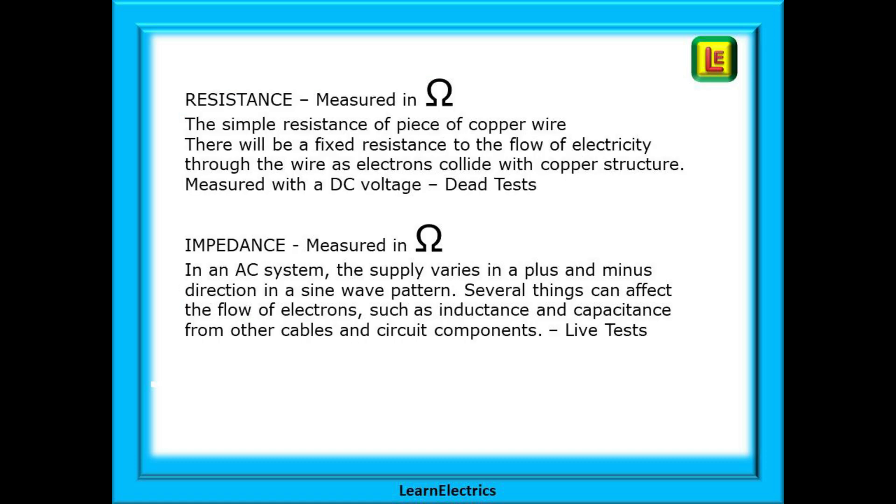Before we begin we must understand these two words. The first is resistance and this is measured in ohms. Here we are interested in the simple resistance of a piece of copper wire. The copper will show a fixed resistance to the flow of electricity through the wire as electrons collide with the copper structure. It is measured with a DC voltage around four volts and just fractions of an amp and it is a dead test.